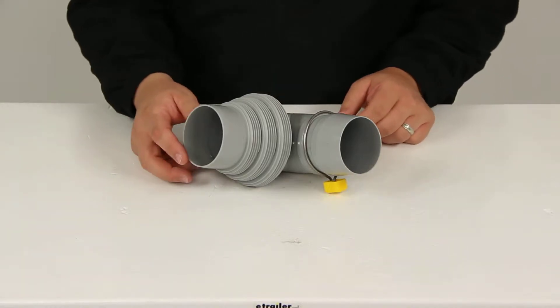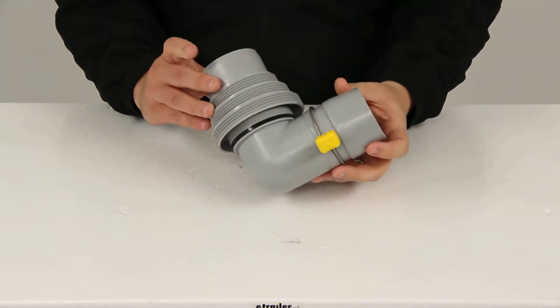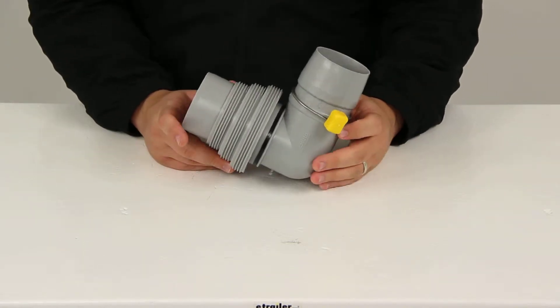Today we'll be reviewing part number CAM39144. This is the CAMCO Easy Slip Elbow Fitting and 4-in-1 adapter for RV sewer hoses.